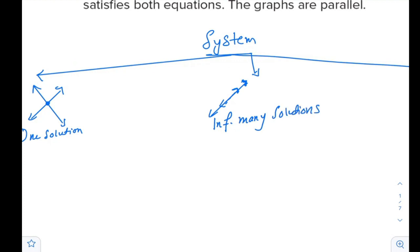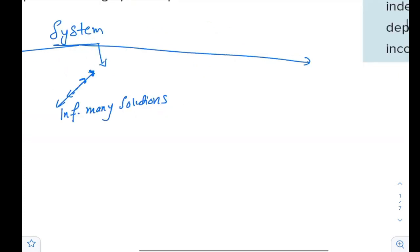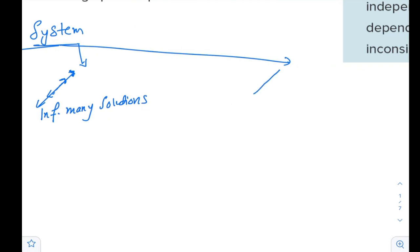We might have one solution or infinitely many solutions. Or we can have this case, and in this case, as you see, very clear, the lines are parallel. They will never meet. So in this case, we will say there is no solution.